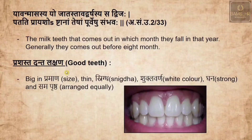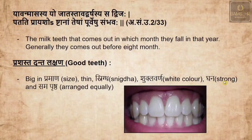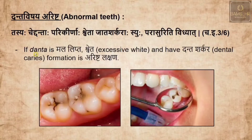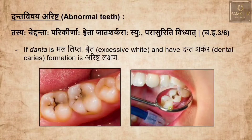Some of the Prasastha Danta Lakshana — good qualities of teeth — are: big in pramana (size), thin, snigdha, shuklavarna (white color), ghana (strong), and samapurishtha (arranged equally). Abnormal teeth — Danta Vishaya Arista — include malalipta (excessively discolored), Danta Sharkara (dental caries).